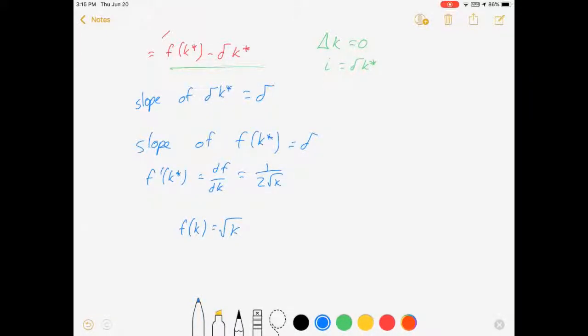Where did that come from? Well F of K is K to the one half, which means if I use my power rule F prime of K is equal to - let's see, bring that exponent down - one half times K risen to the one half minus one is negative one half, which is 1 over 2 times 1 over K to the one half, which is 1 over 2 K to the one half, which is 1 over 2 square root K.